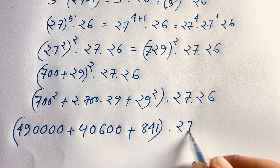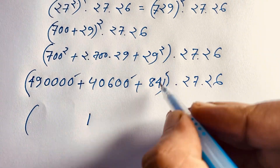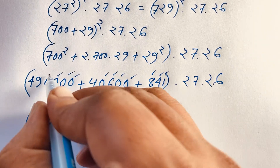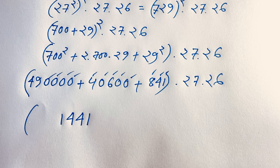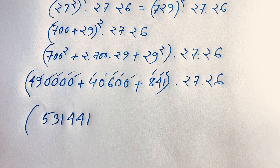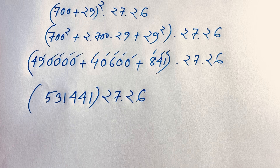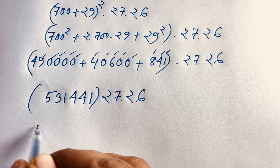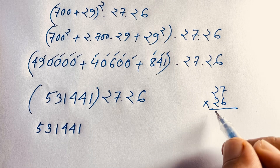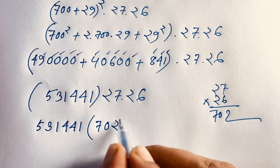Adding these three terms: 490000 plus 40600 plus 841 equals 531441. And 27 times 26 equals 702. So we need to compute 531441 times 702.